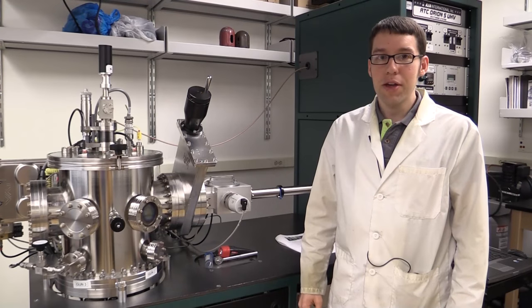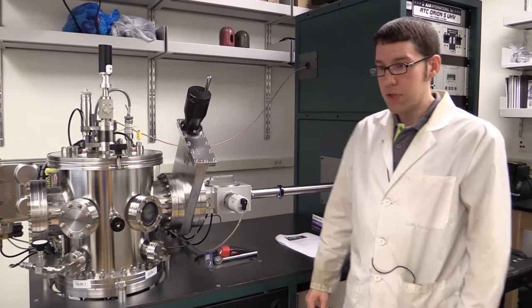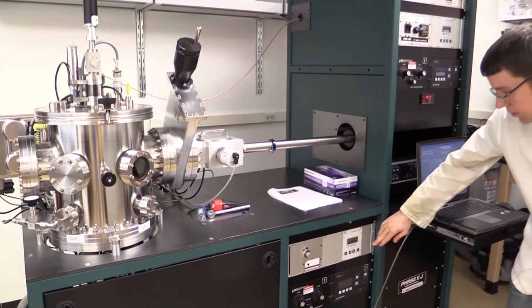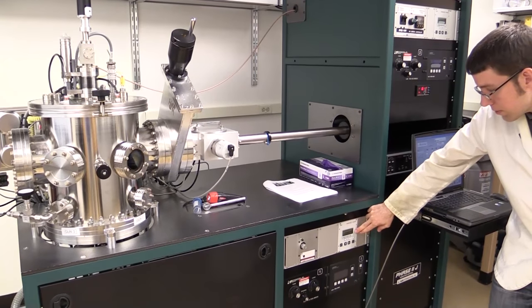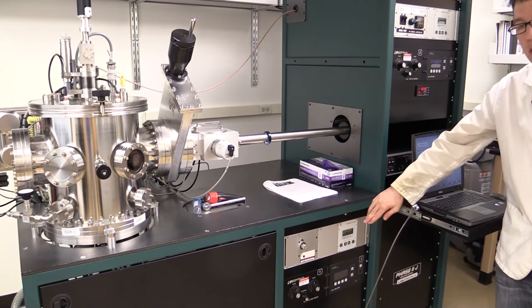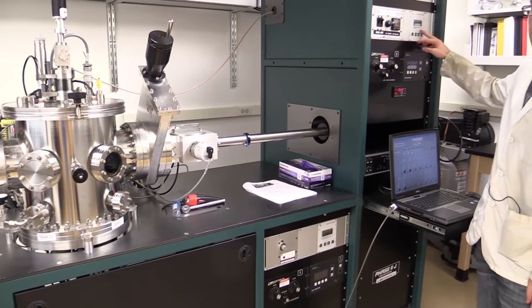Now we have a vacuum in the load lock chamber, which I can see on this pressure gauge. Currently, the vacuum is 2 times 10 to the minus 5 millibar, and we've matched the vacuum reasonably well with the main chamber, which is shown on this pressure gauge.